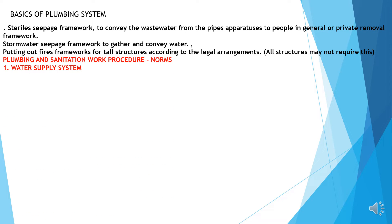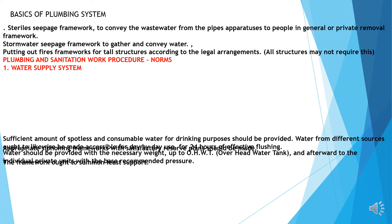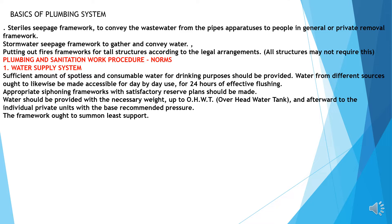Plumbing and sanitation work procedures — norms. Water supply system: sufficient amount of clean and consumable water for drinking should be provided. Water from different sources ought to be likewise made accessible for day-to-day use, including 24 hours effective flushing. Appropriate stiffening frameworks with satisfactory reserve plans should be made. Water should be provided with the necessary pressure up to overhead tank and then to individual private units with the base recommended pressure. The framework ought to require minimum maintenance.